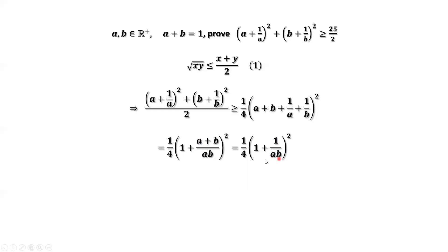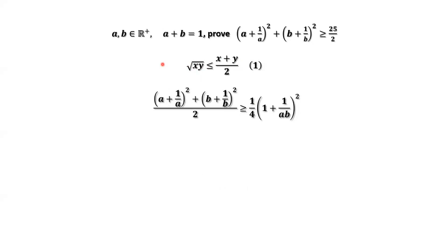Now, we need to find the upper bound for ab. We use this formula again: x equals a, y equals b. Both sides take the square. Then we have ab ≤ ((a+b)/2)². a plus b equals 1. 1/2 squared equals 1/4.